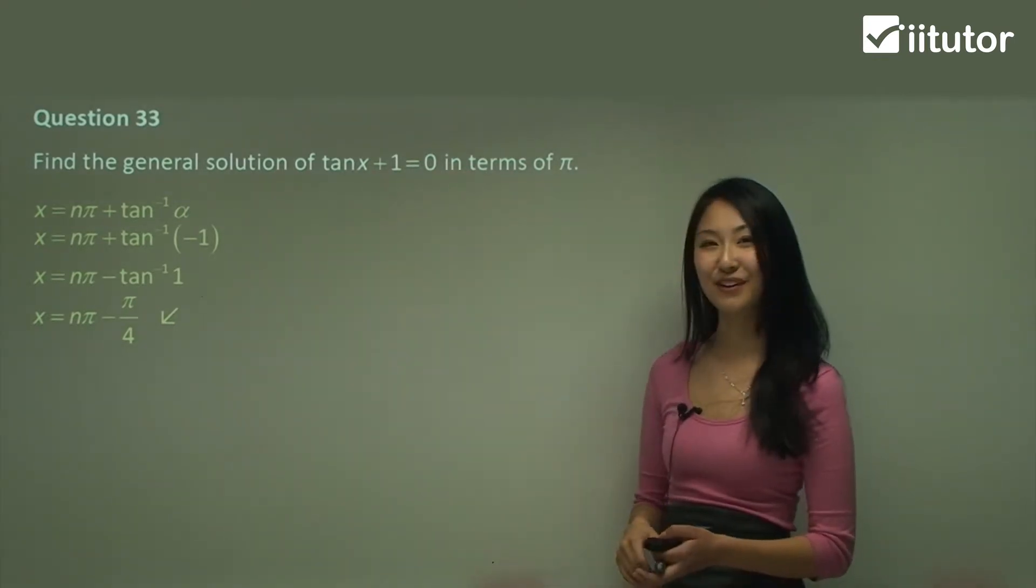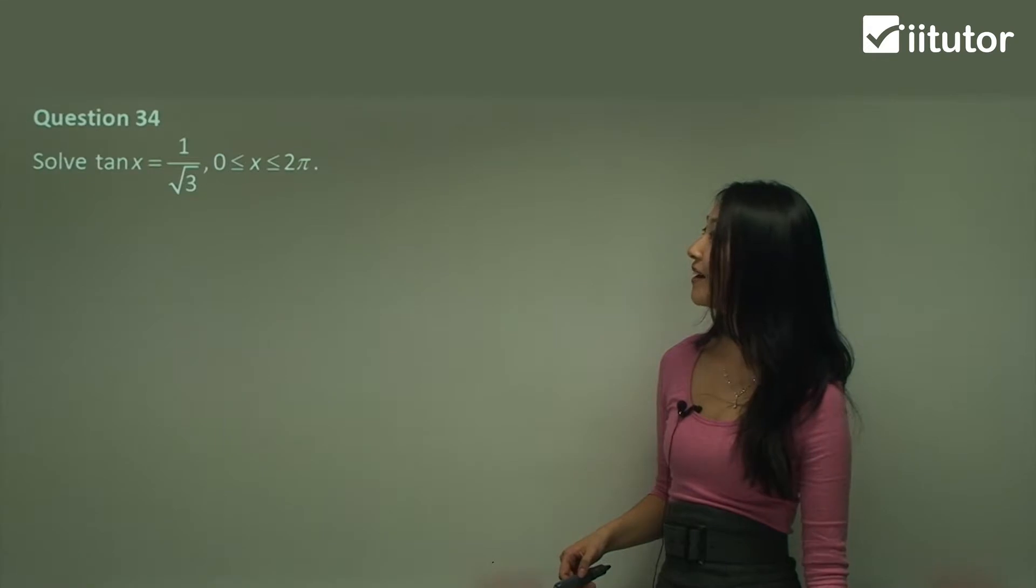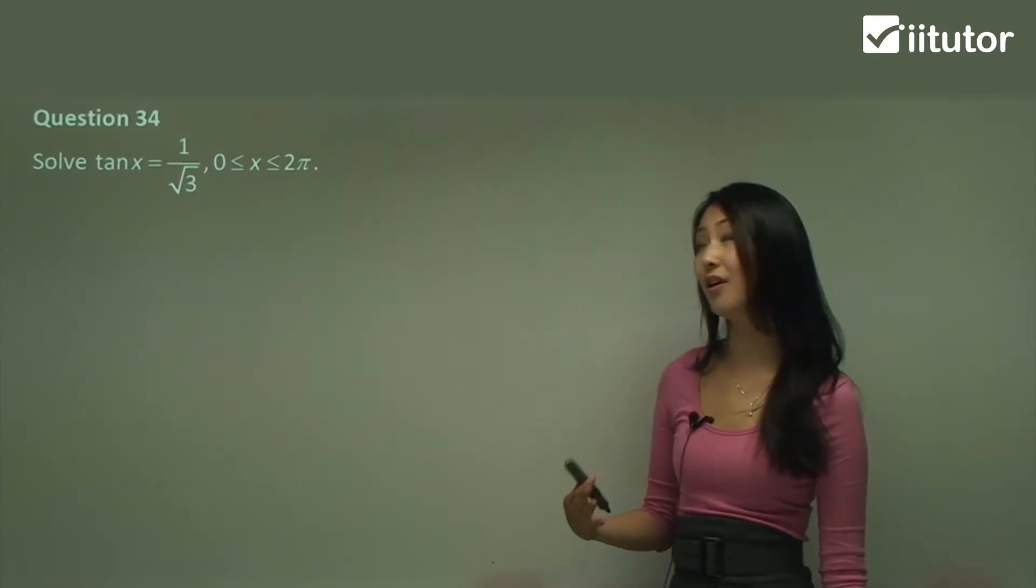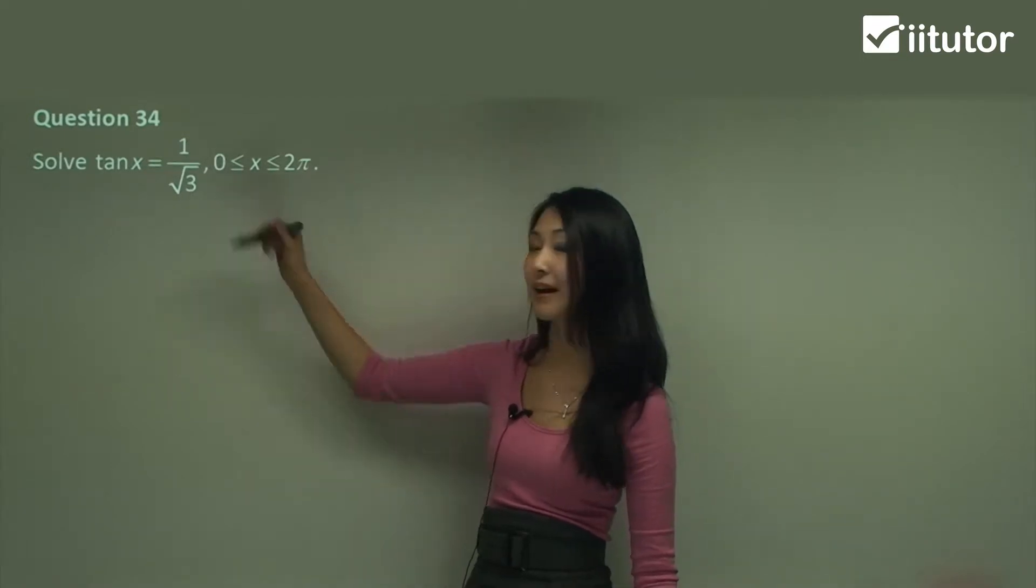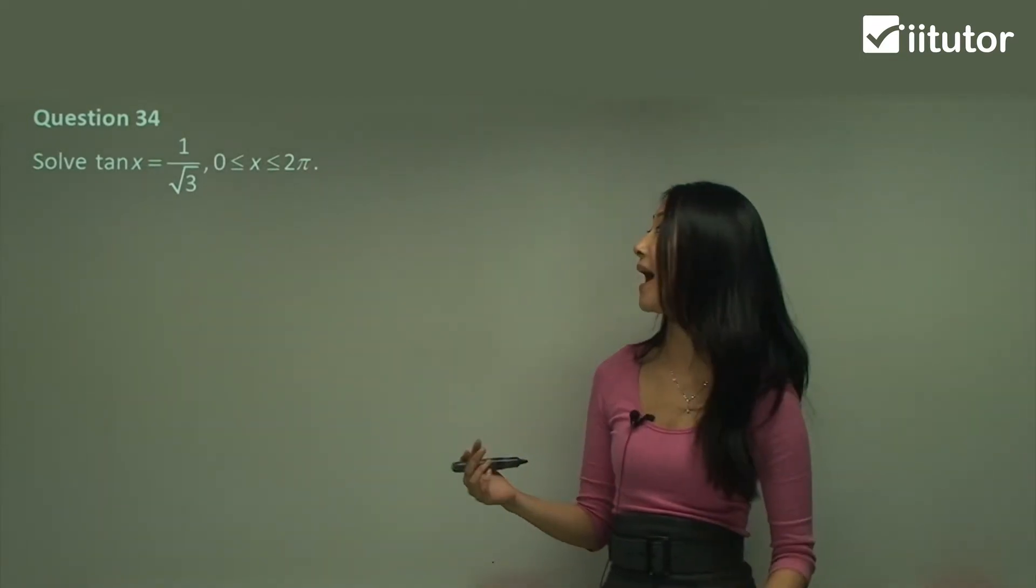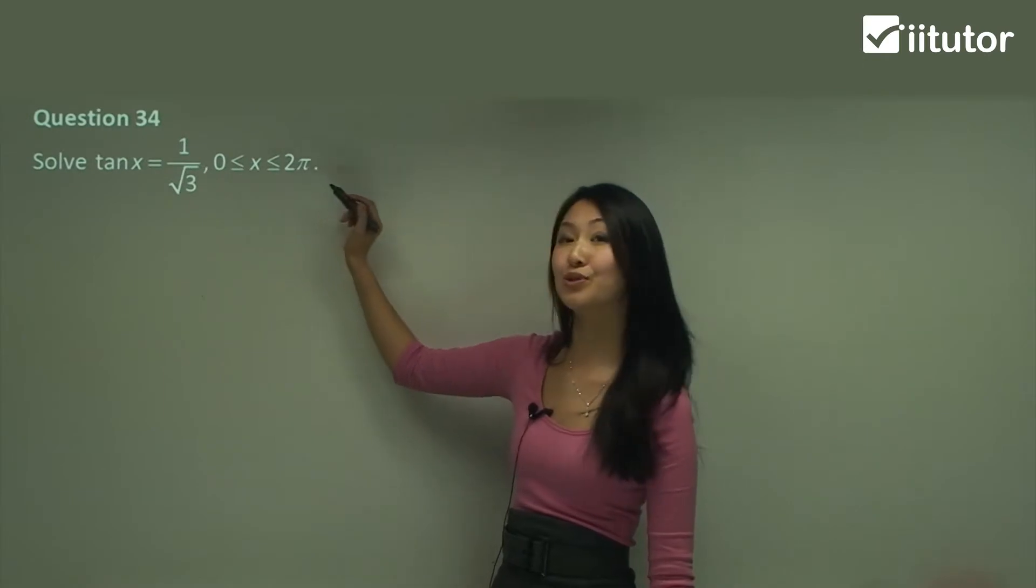Let's move on now. In question 34, we want to solve this equation here of tan x equals one on square root three, but within the given domain of zero and two pi.